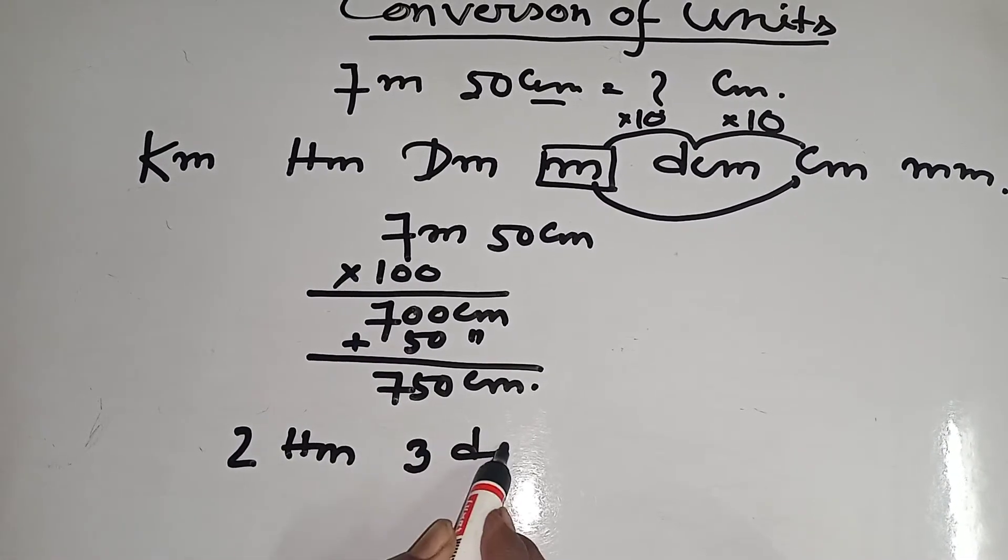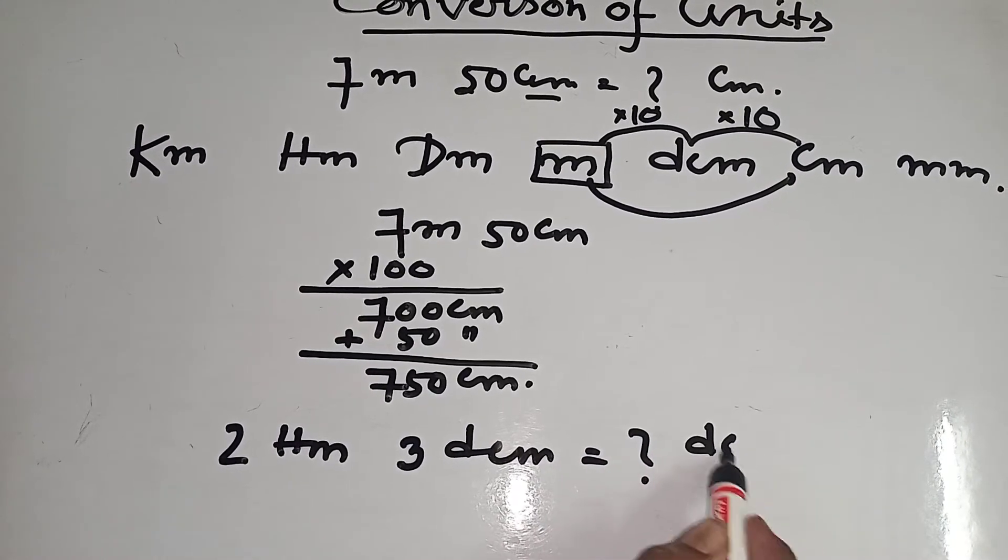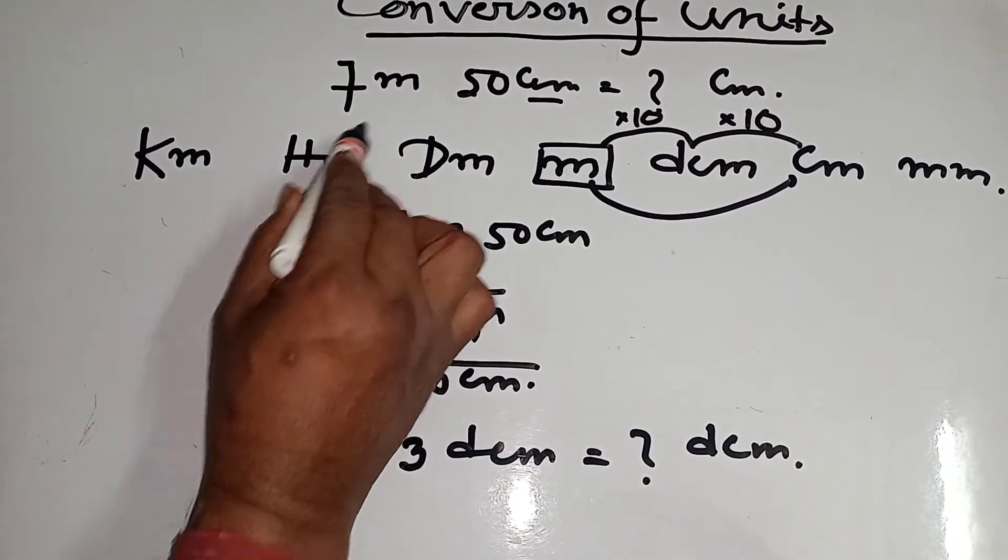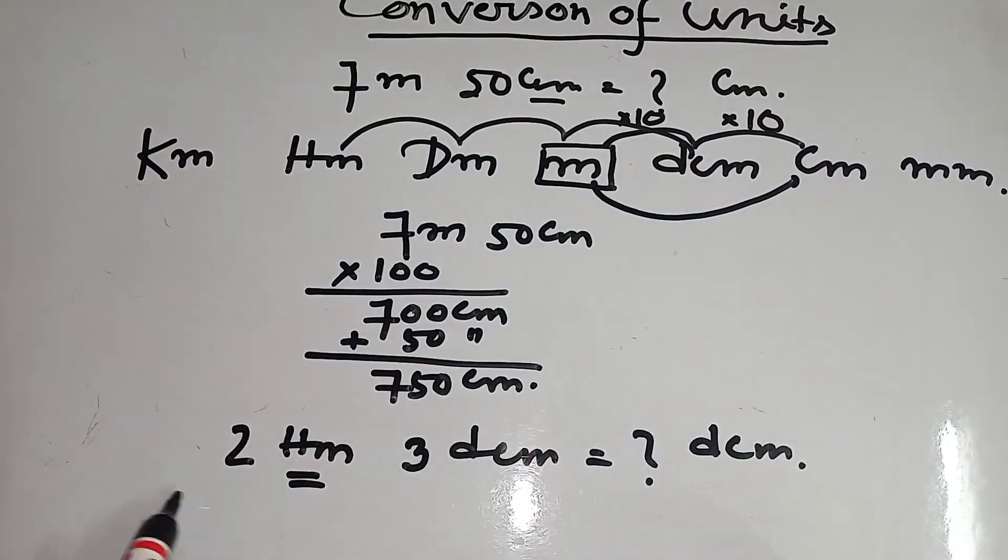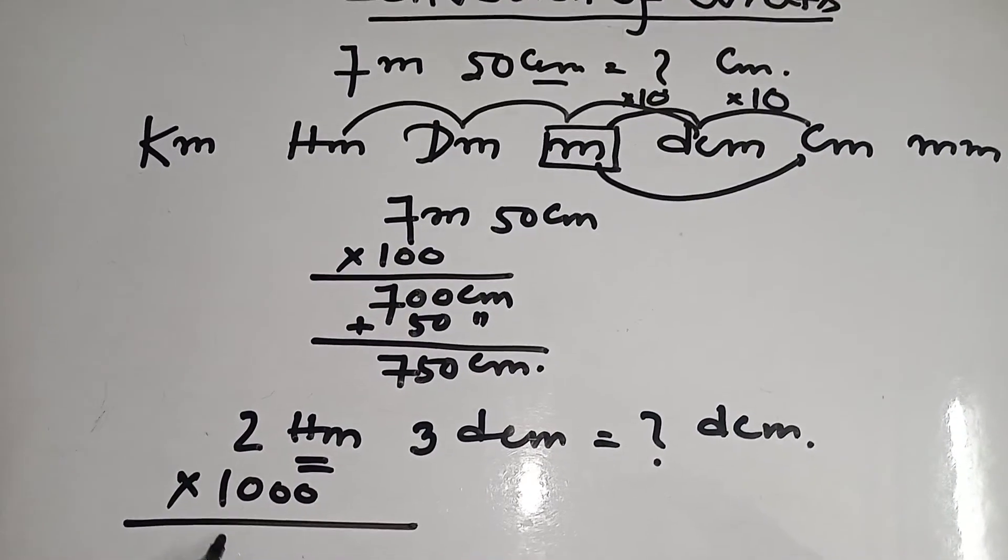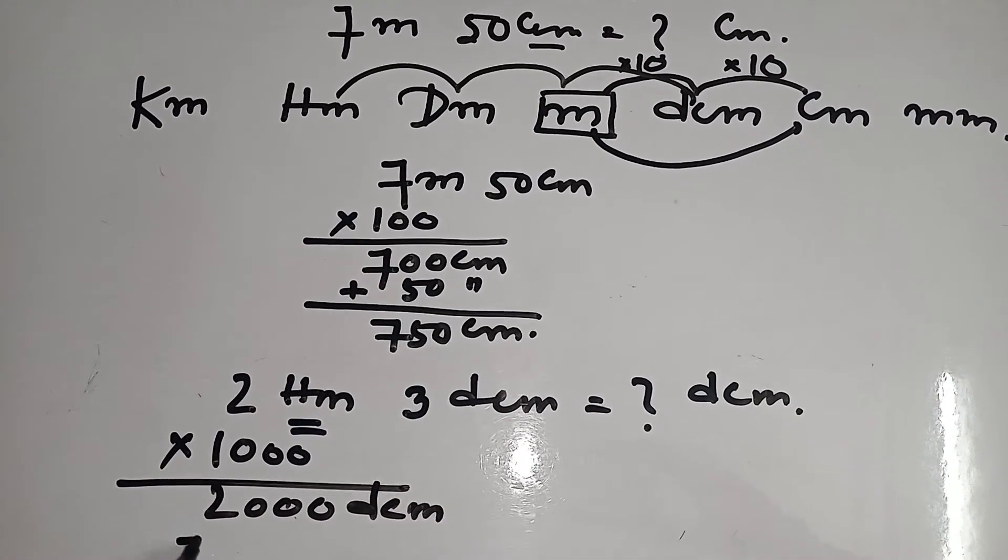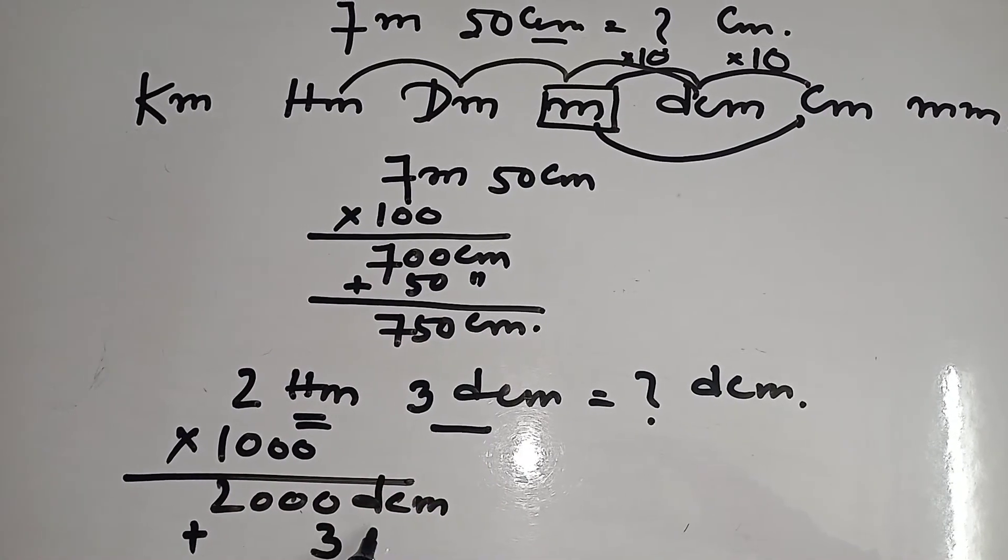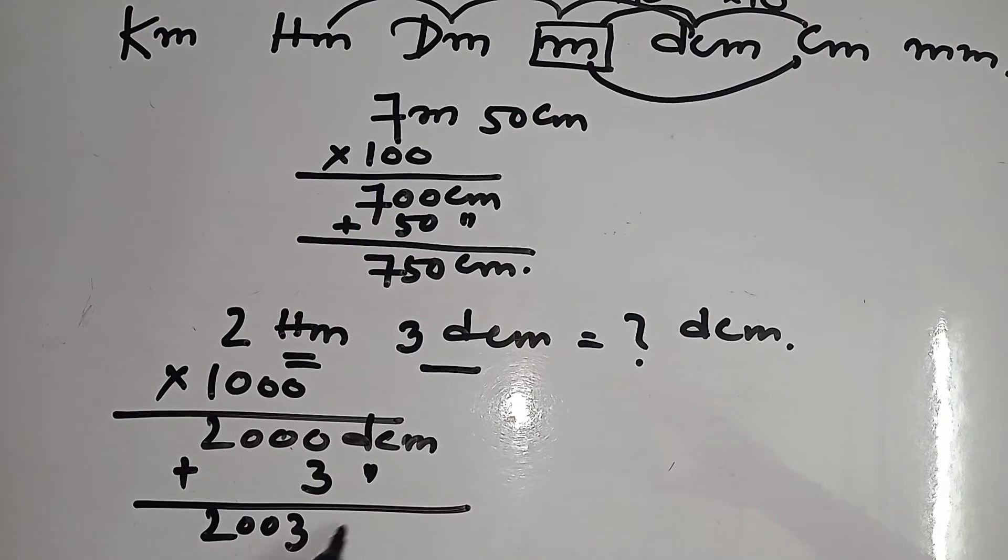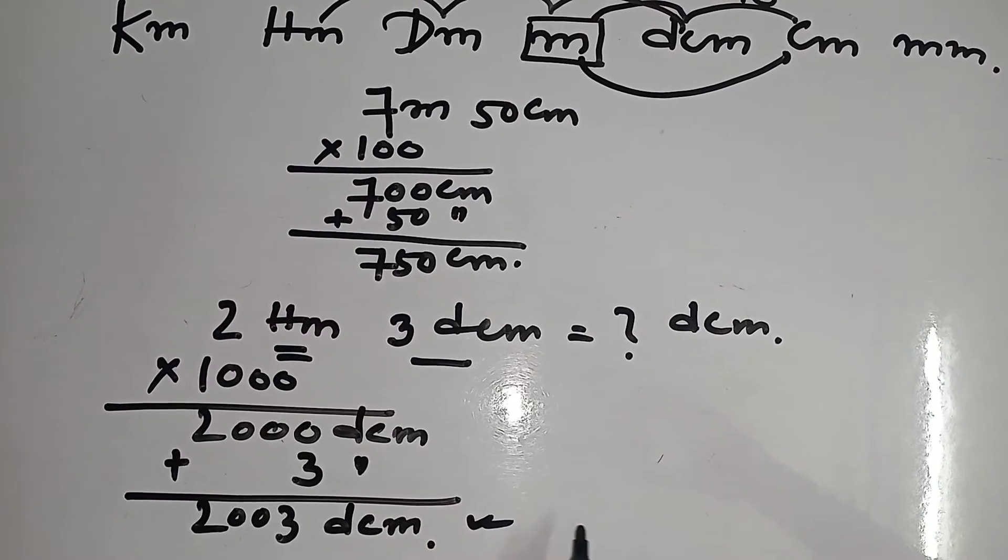3 decimeter equal to how much decimeter. Here hectometer, that means here 10, 10, 10, that means into 1000. That means 2000 decimeter plus has given 3 decimeters, it will be 2003 decimeter answer. Again.